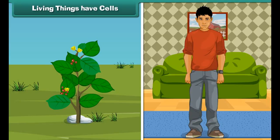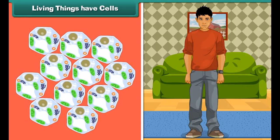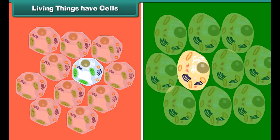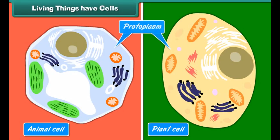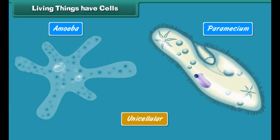Each living being has a distinct individuality — it cannot be broken into two or more independent parts. The body of a living being is made of one or more cells. Cells are considered to be the structural and functional unit of life. The cells are made of protoplasm, or living matter. Some living organisms like amoeba and paramecium are made up of one cell — they are called unicellular.